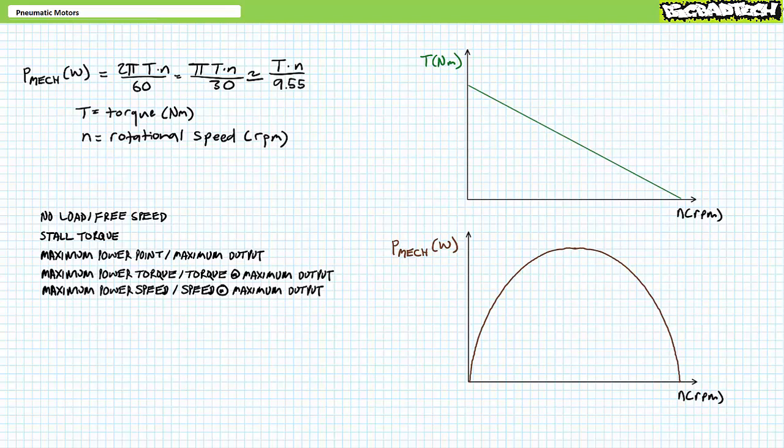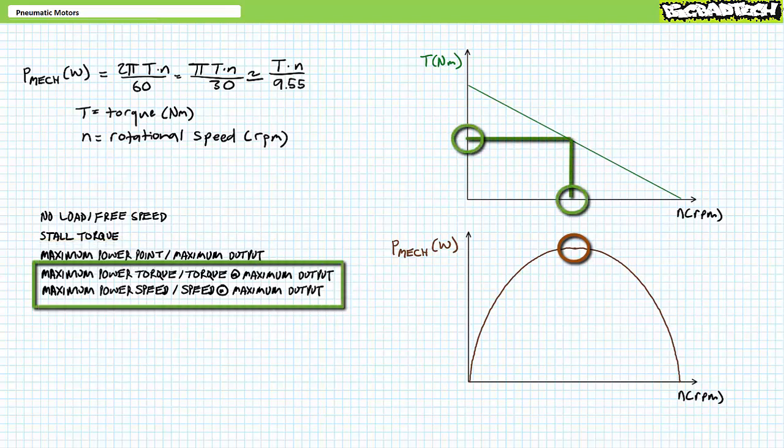Several points of interest can be found on an air motor speed torque and mechanical power curve, notably the no load or free speed, the stall torque, the maximum mechanical power point, and the maximum power torque and the maximum power speed. As implied by the title, the no load or free speed is the speed of the shaft when exerting no torque. This is the far right of the speed torque curve. Again, as implied by the title, stall torque is the torque exerted by the motor when it comes to rest from a running condition. Similarly, the maximum power point or maximum output is the peak of the power curve, which typically occurs around 50% of the free speed. The maximum power point is characterized by maximum power torque and maximum power speed. These properties alternatively might be called torque at maximum output or speed at maximum output depending upon manufacturer.